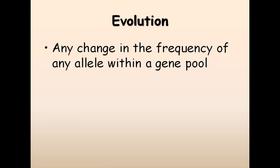Evolution is any change in the frequency of an allele within a gene pool. The frequency remains constant if there are no disturbing influences, but if there are any disturbing influences the gene frequency of a gene pool can be disrupted, and this disruption can lead to the generation of new species through the process called evolution. Populations can undergo evolution — no individual can.